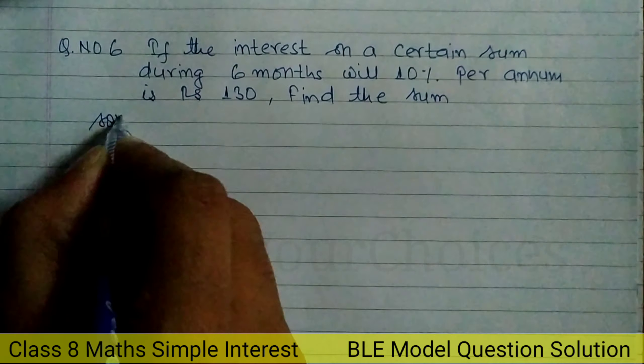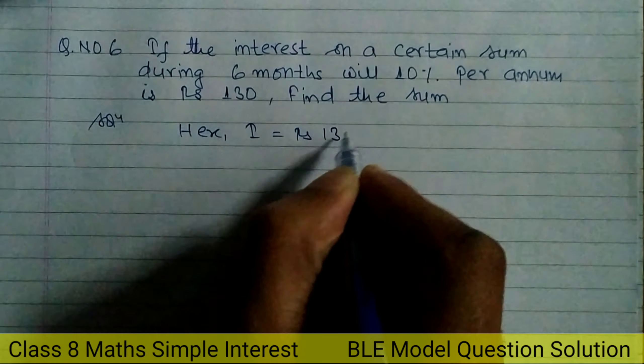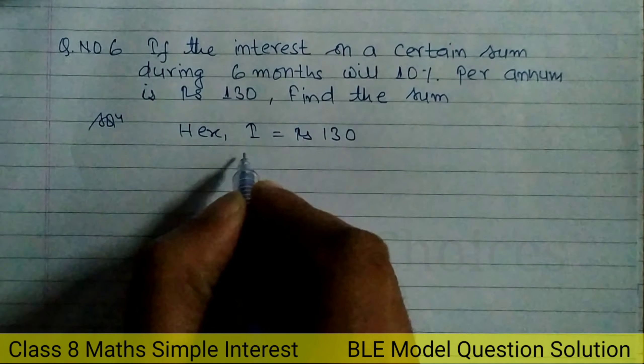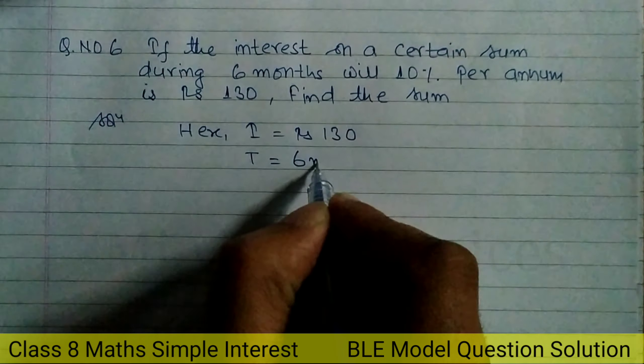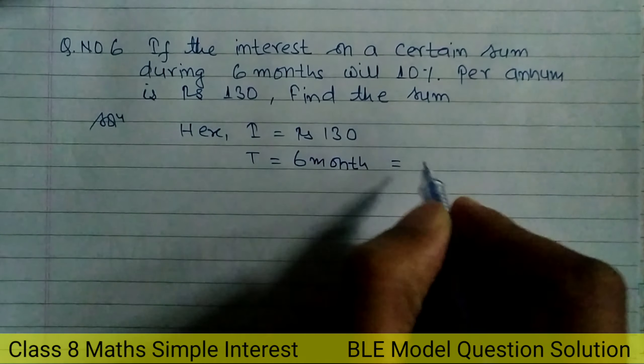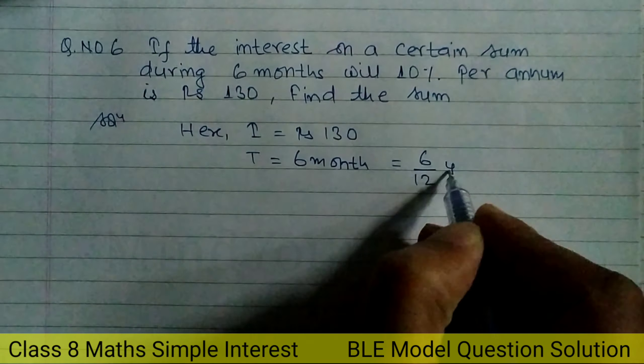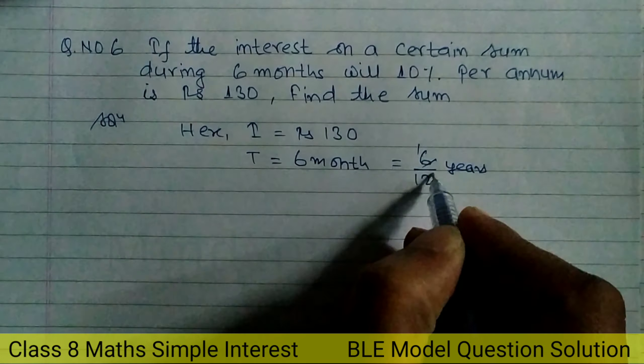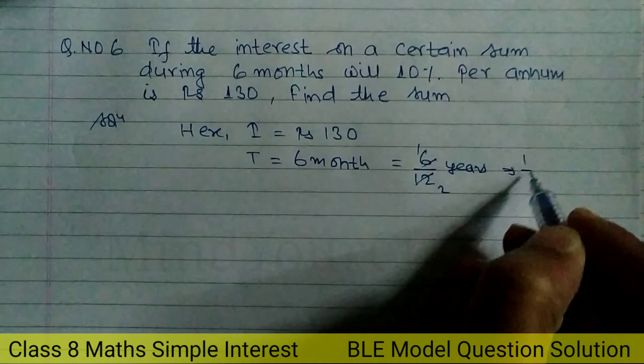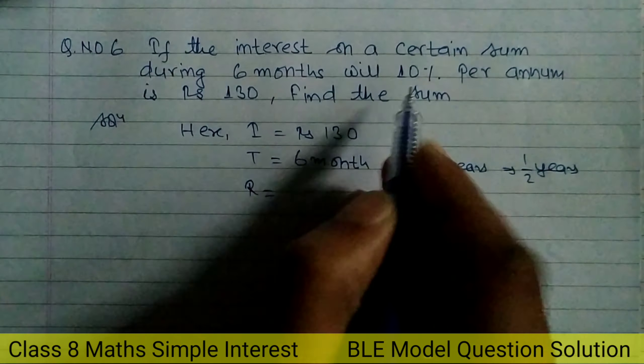Let's start. Here, interest I is equal to Rs. 130. Time is 6 months. We convert months to years by dividing by 12. So 6 divided by 12 is 1 by 2. The rate of interest R is equal to 10%.